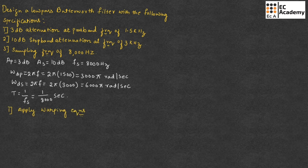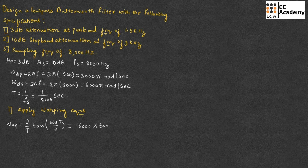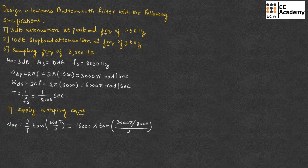The first step is to apply the warping equations. For the passband, we can write Omega_dP equals 2/T * tan(Omega_dP * T / 2). Substituting the values, 2/T is 16000, and Omega_dP * T is 3000*pi divided by 8000, whole divided by 2. Solving this, we get Omega_dP equal to 1.0691 × 10^4 radians per second.